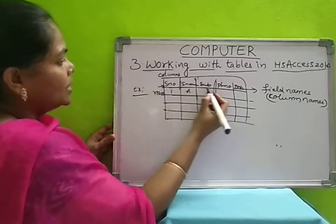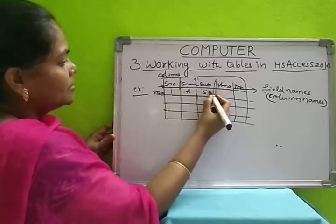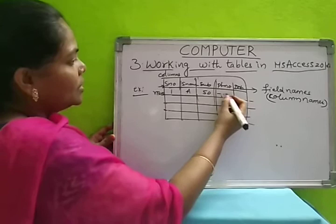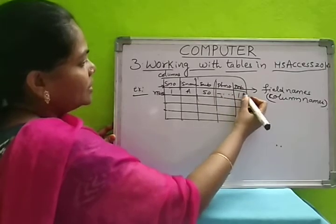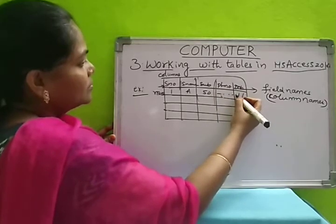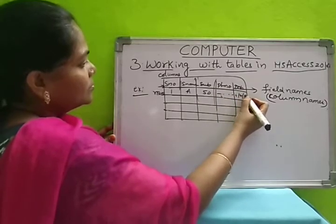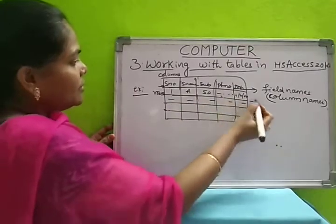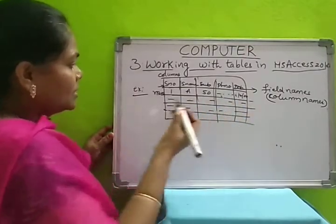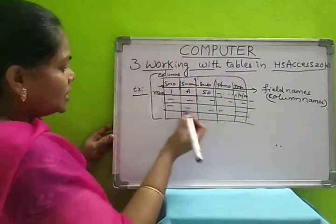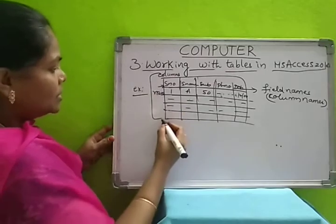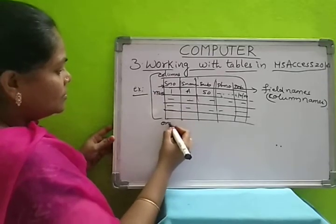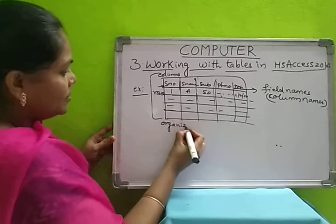Student number, student name, some subject marks, phone number, date of birth — like that. We will enter the information of different students and store it in a table. This organized information we will store in a table.